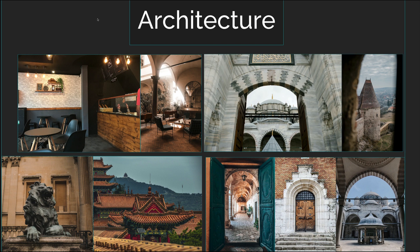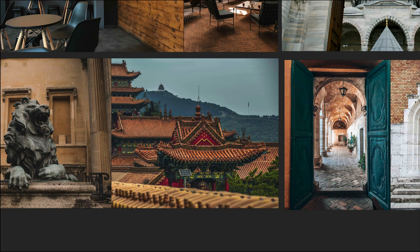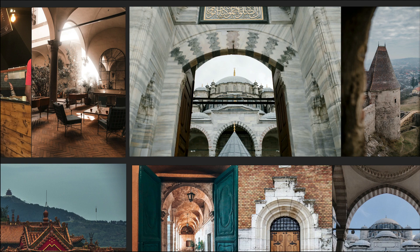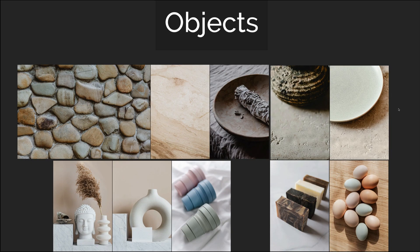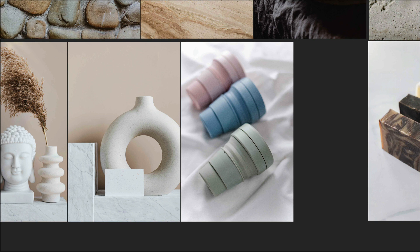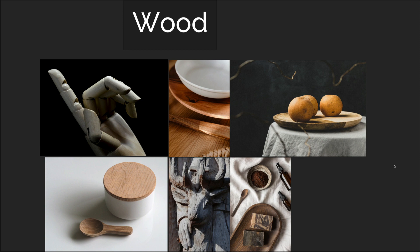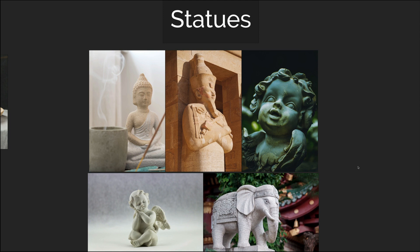Let's look at some mostly diffuse real-world examples. We can find a lot of diffuse items in architecture — stone, wood, bricks, ceramic rooftop tiles, stone statues, marble buildings. We also have rocks, ceramic, concrete, bars of soap, eggshells, ceramic cups. Wood is often very diffuse — wooden spoons, sculptures — usually very dull and earthy. Many statues, particularly made of stone, ceramic, or marble, are great examples.